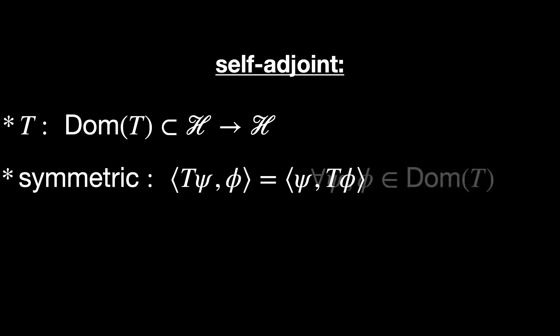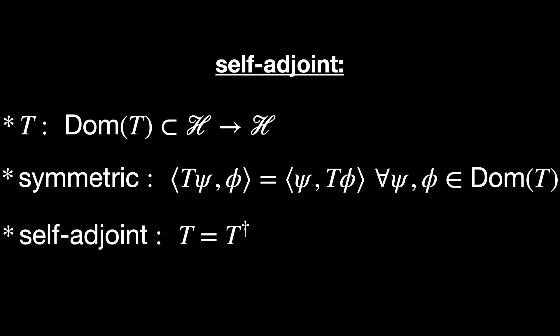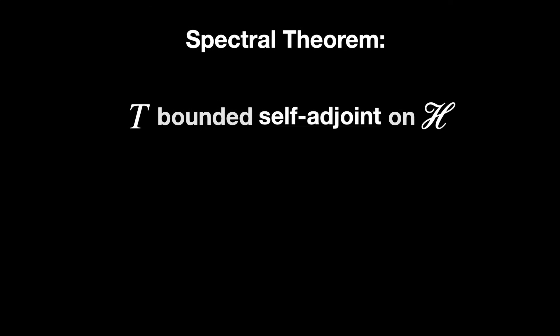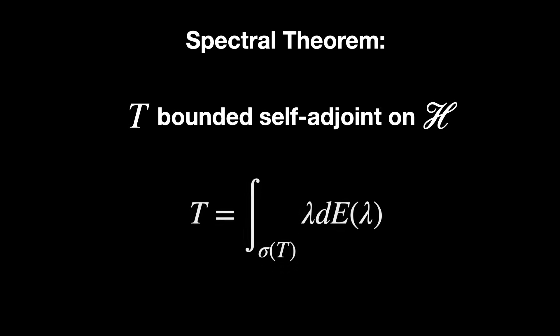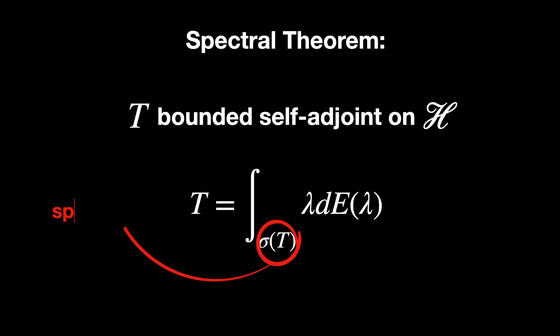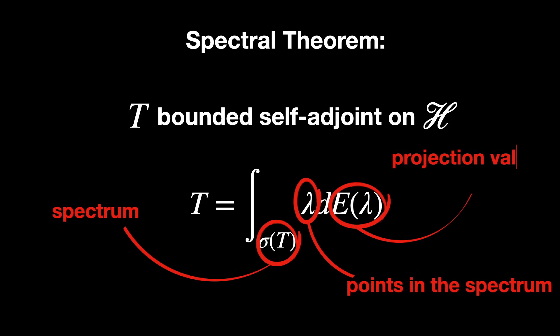The second definition, self-adjoint operators. Let T be a linear operator. We say that T is symmetric if this equation is valid for all psi and phi in the domain of T. And we say it is self-adjoint if this equation is valid, so the domain of the operator is the same as the domain of its conjugate transpose. Now, an important theorem, spectral theorem, for bounded self-adjoint operators. Let T be a bounded self-adjoint operator on a Hubert space. Then, T equals the integral over sigma of T, where sigma of T is the spectrum of T, of lambda times dE of lambda. Lambda represents the points in the spectrum and E of lambda is the projection-valued measure. The intuition here is that T breaks apart the Hubert space into orthogonal spectral components.